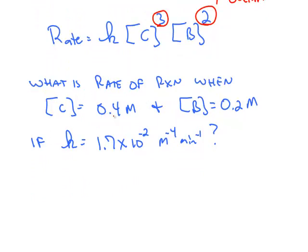So here is a problem where we're given C's molarity, B's molarity, and the rate constant k. We want to know the rate, so it's just a matter of substituting in the rate constant.